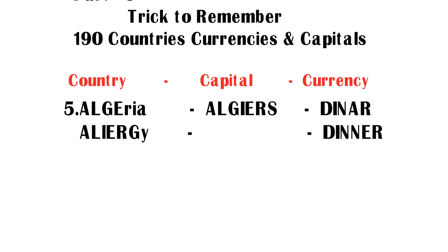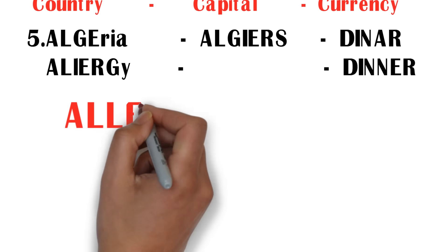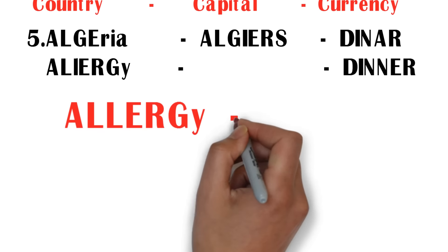Coming to the capital Algiers — you can easily remember this because both the capital and country names almost look similar. So our target is to remember the currency. The currency is Dinar — its pronunciation is similar to 'dinner.' So try to remember Dinar as 'dinner.'